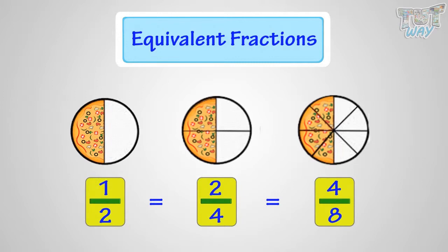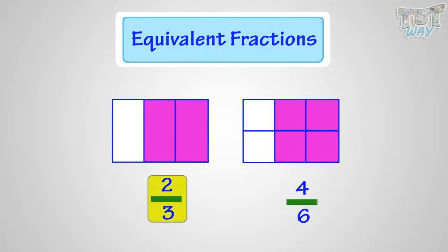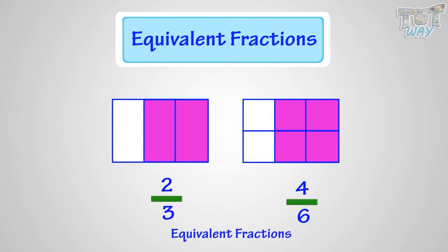Let's see more examples of equivalent fractions. The shaded portion in two figures is representing the same portion of this figure, but here it is two by three, and here it is written four by six. So two by three and four by six are equivalent fractions, as both are representing the same part of the rectangle.